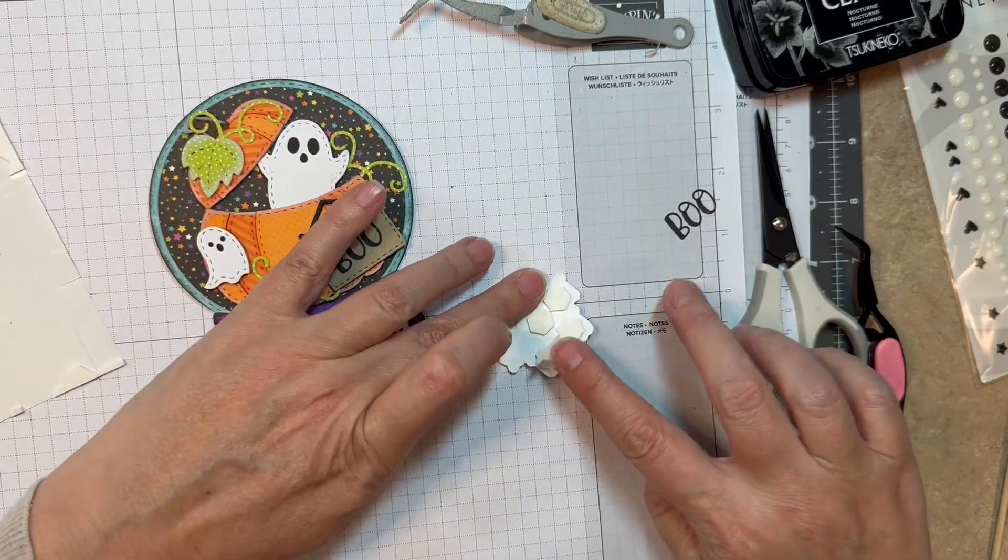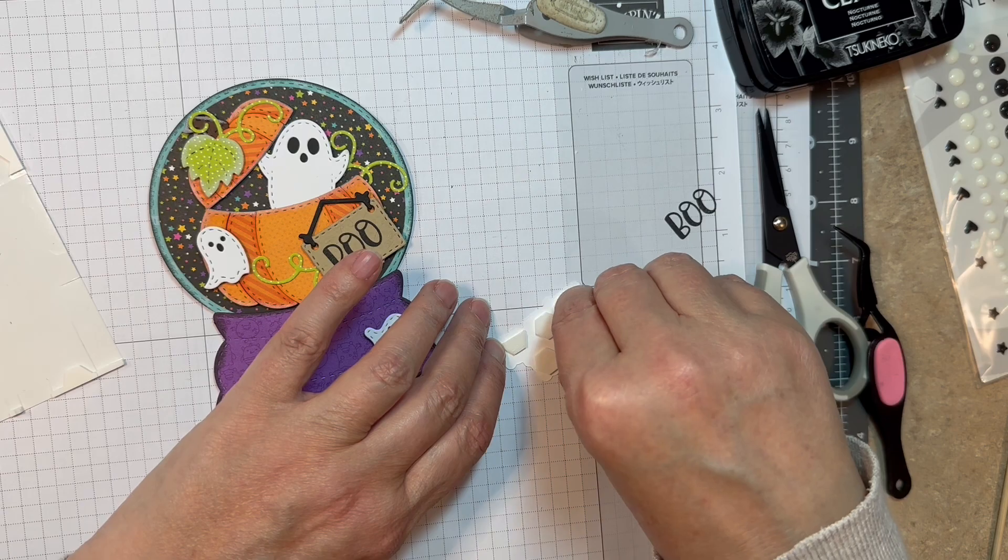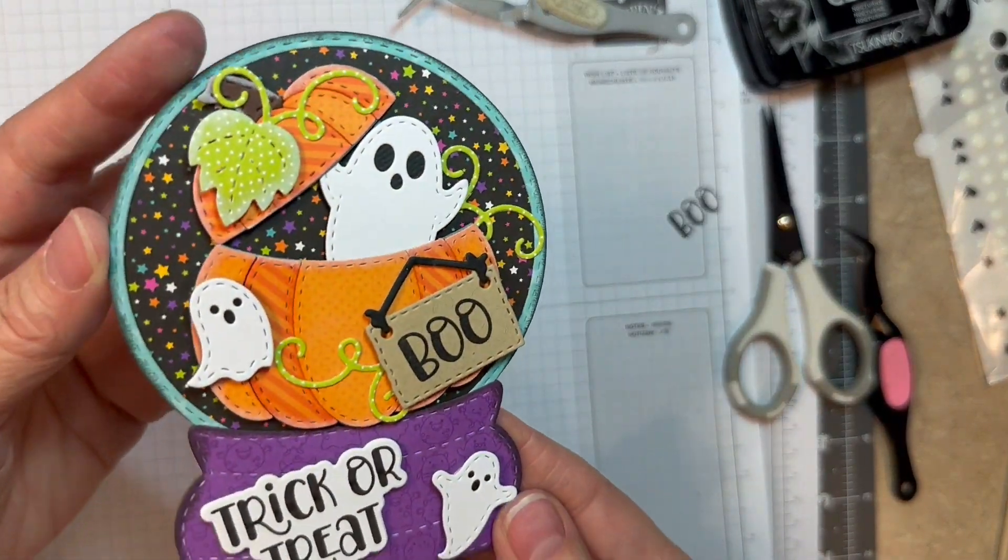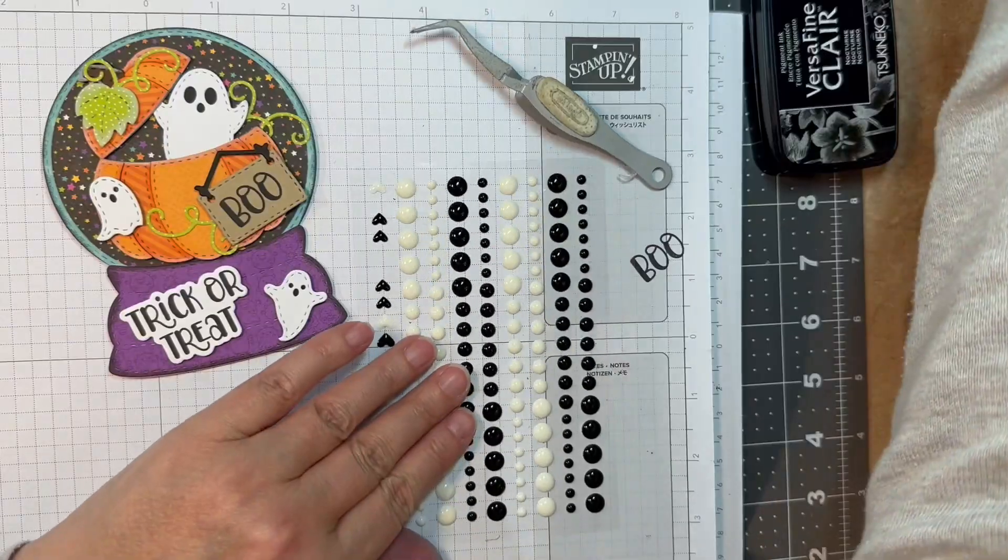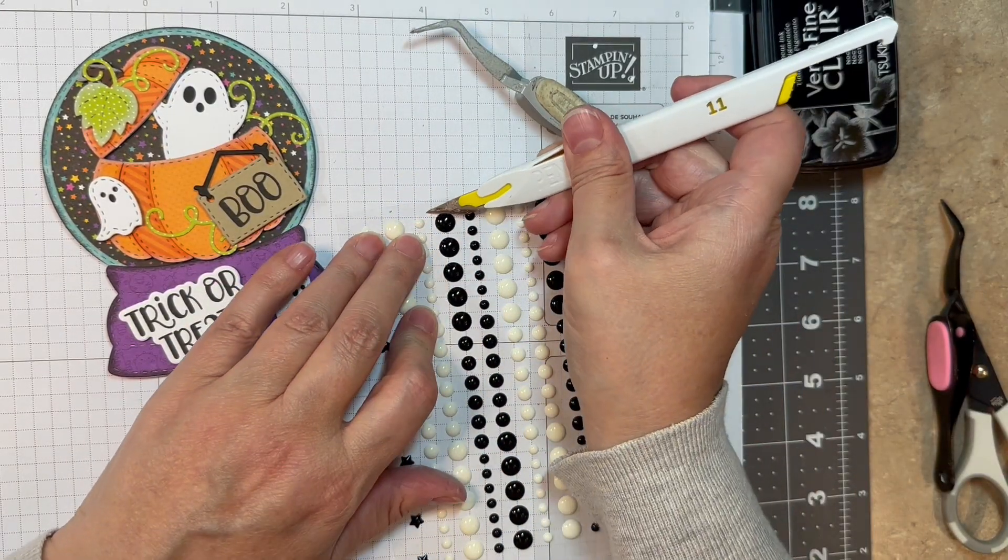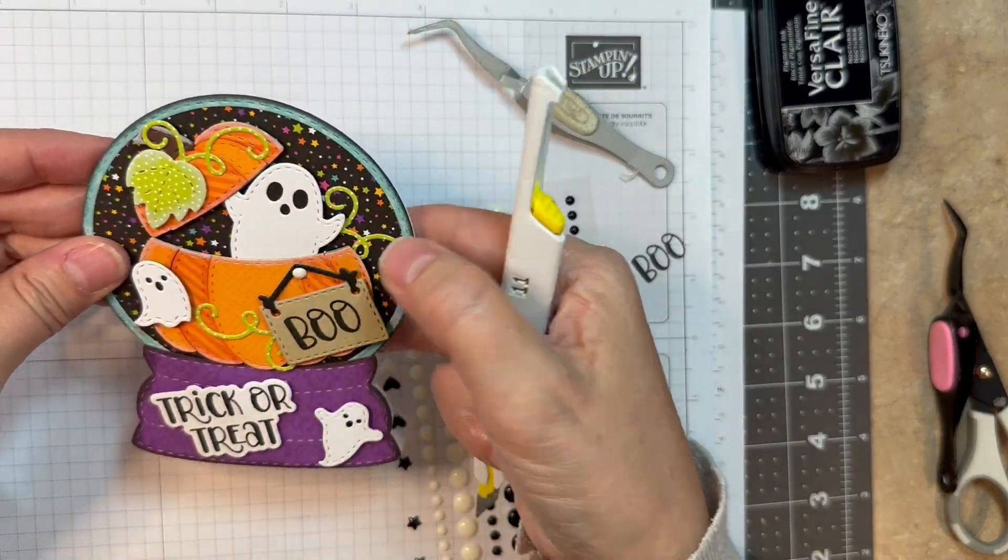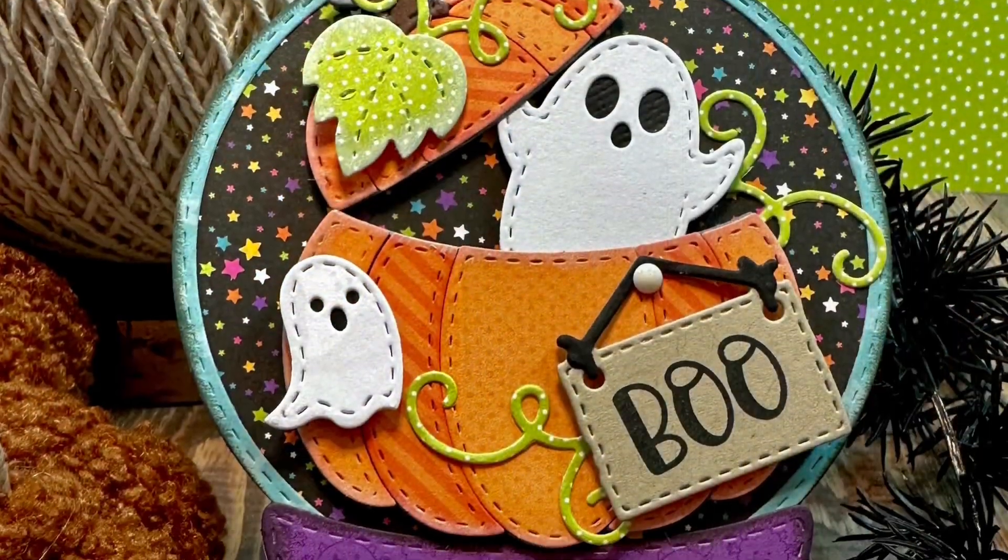So now I'm popping up a sentiment from Spooky Season Stamp Set. That's on Nina Solar White 80-pound cardstock in Versafine Clear Nocturne Ink. I cut that out with the matching outline dies. Now I'm pulling out Altenew's Enamel Dots Essential Black and White. I'm going to take the tiniest white one and pop it into place to make it look like a little nail head. And now we are done.